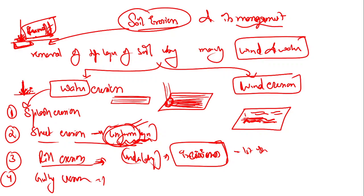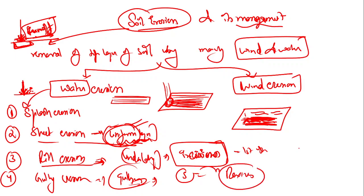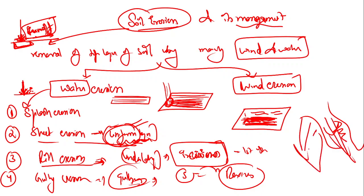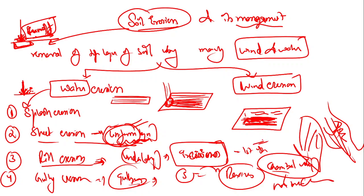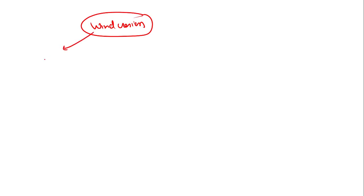Gully erosion creates huge gaps between them, forming gullies. The fifth and higher advanced stage of this erosion is ravine formation - formation of large badlands. Here water is flowing and ravines are formed. The most prominent area in India is the Chambal Valley, not suitable for cultivation at all. Cultivation can be done with some technical or mechanical features at the gully stage, but at the ravine stage it is impossible.